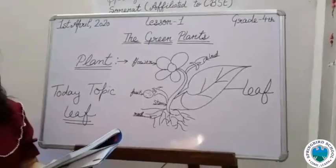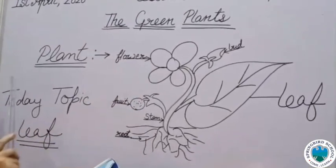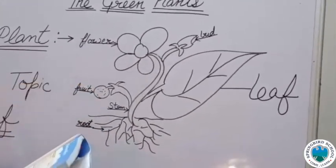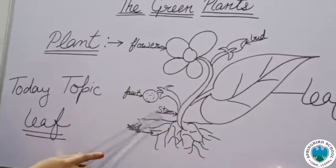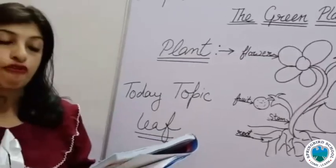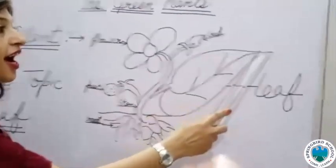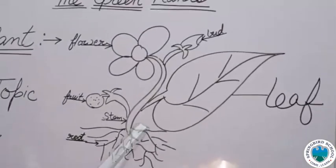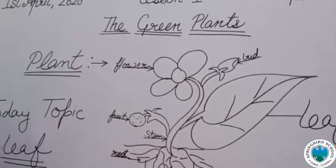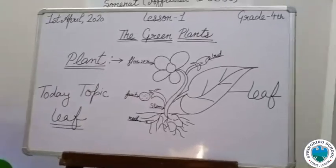Third question: 'I keep the plant upright and transport water to the leaves.' This is your stem. Next: 'I look green and make food for the plant. I am also called the kitchen of the plant.' Yes, this answer is your leaf. So today's topic is our leaves.